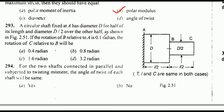When two shafts of the same length, one of which is hollow, transmit equal torques and have equal maximum stress, they should have equal: polar moment of inertia, polar modulus, diameter, or angle of twist. Correct answer: option B — polar modulus. A circular shaft fixed at A has diameter d for half its length and diameter d/2 over the other half. If the rotation of B relative to A is 0.1 radian, the rotation of C relative to B is option C: 1/1.6 radian. For two shafts connected in parallel subjected to twisting moment, the angle of twist of each shaft will be the same — correct answer: yes.